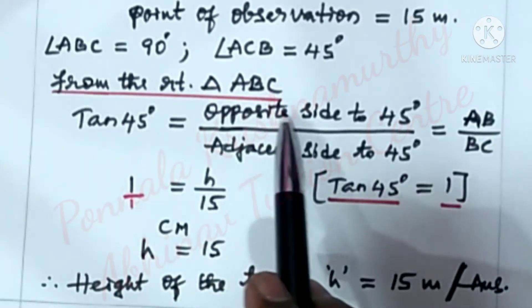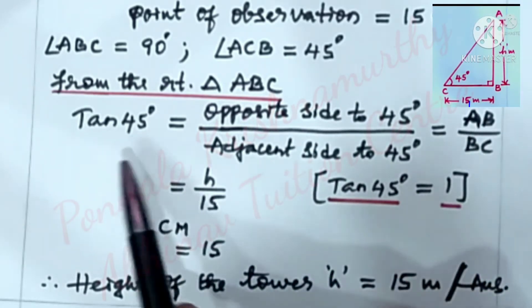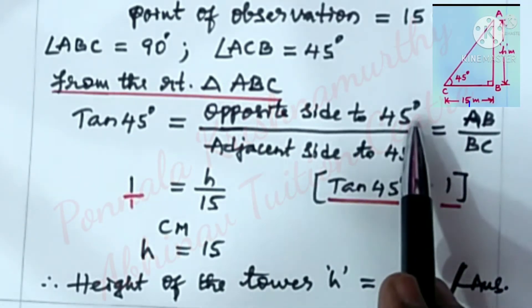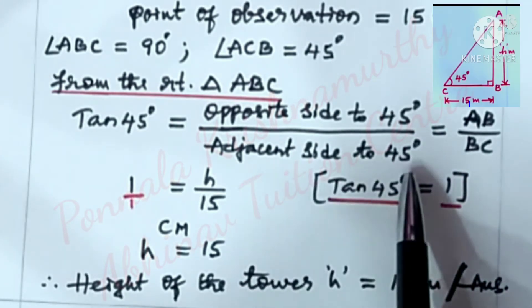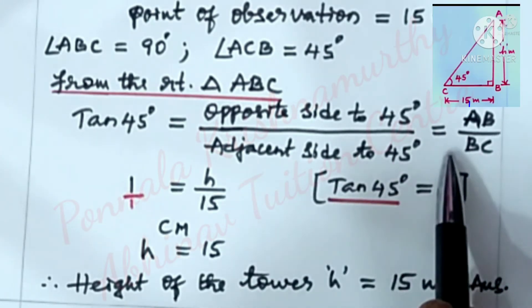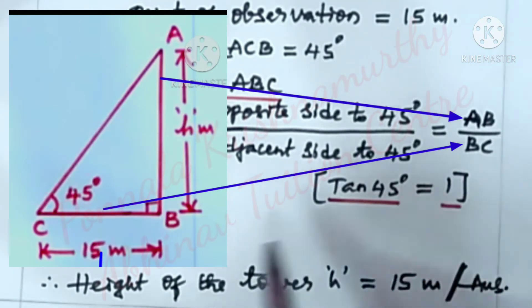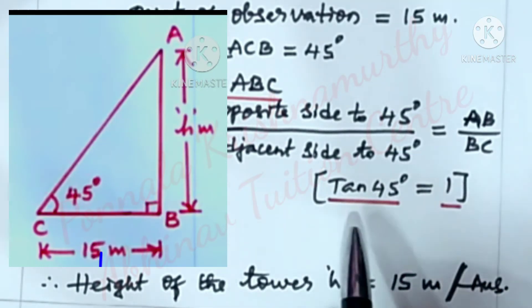From the right angle ABC, tan 45 degrees is equal to opposite side to 45 degrees by adjacent side to 45 degrees, that is equal to AB by BC. We know that tan 45 degrees is equal to 1.